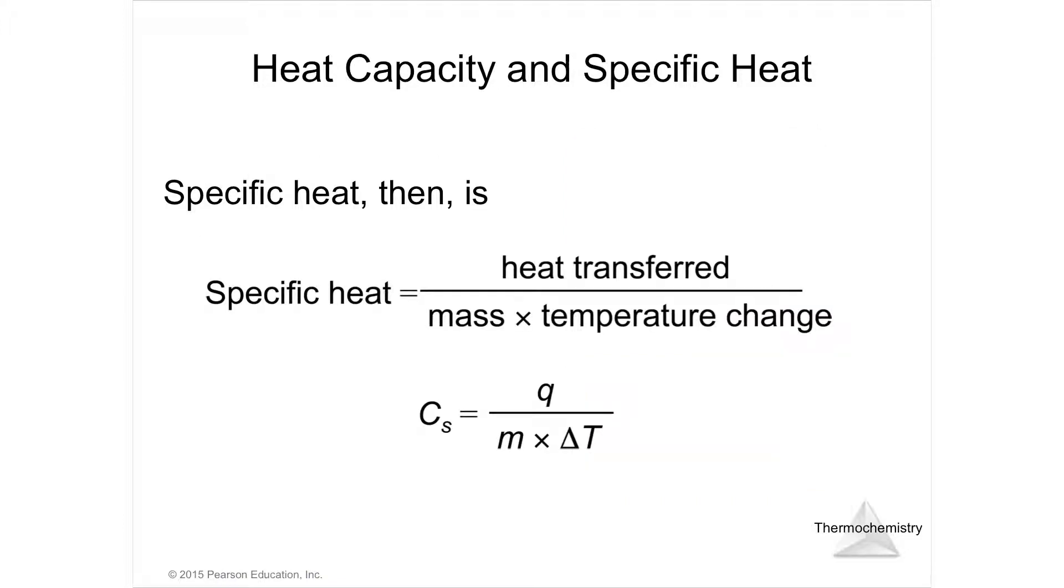The formula for specific heat is the amount of heat transferred per gram of material and also per degree Celsius. So temperature times grams is divided into the amount of heat energy in joules and then that is its specific heat capacity. So every substance is going to have a different specific heat.